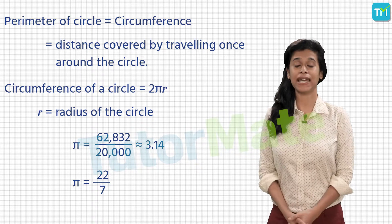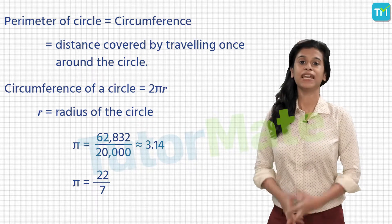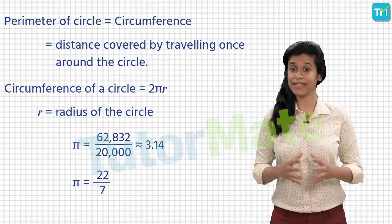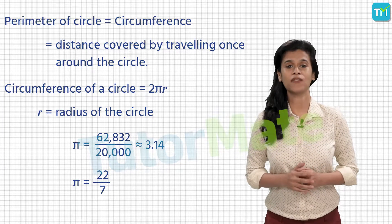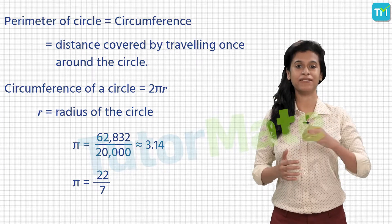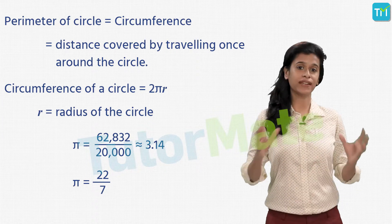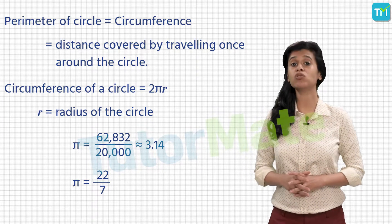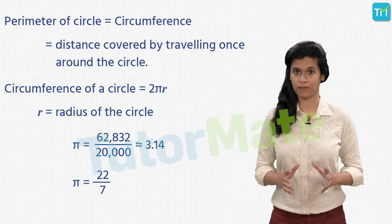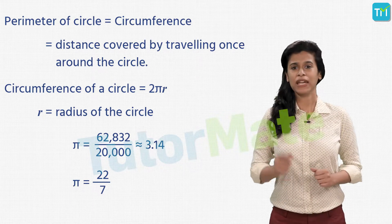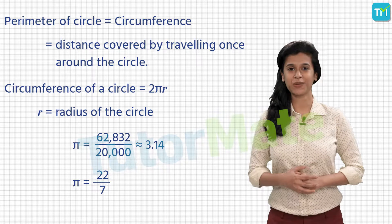How do we calculate the area of a given circle? If you remember, we saw in the 8th standard that the area of a circle can be calculated by dividing it into multiple sectors and then rearranging them to form an almost rectangular shape. Let's do a quick recap.